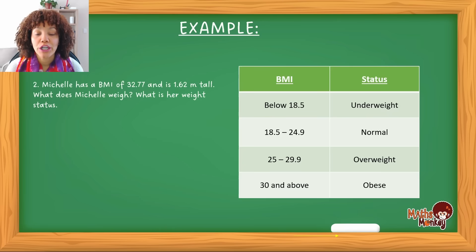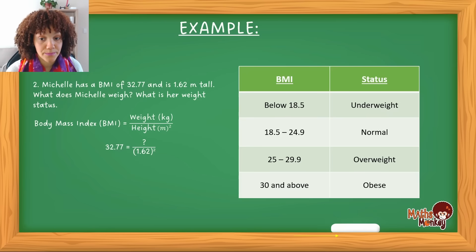Now you will notice here is that they give you the BMI and they give you the height, but you now have to calculate her weight. So again, you'll start with the formula and then you will just substitute the values that you do have. So you have the 32.77, which is her BMI, and the bottom you'll have her height, which is 1.6 squared meters squared.